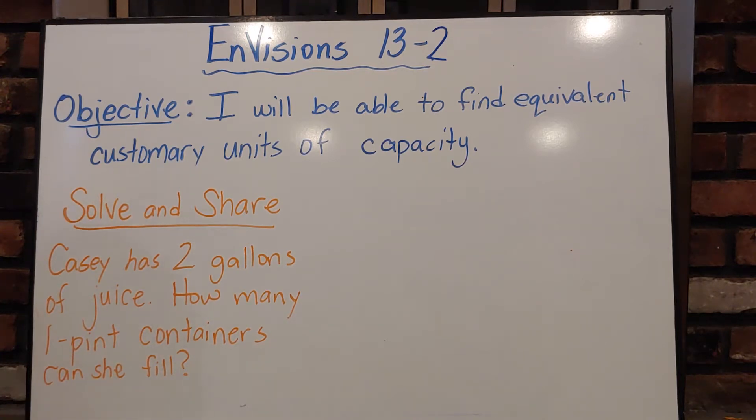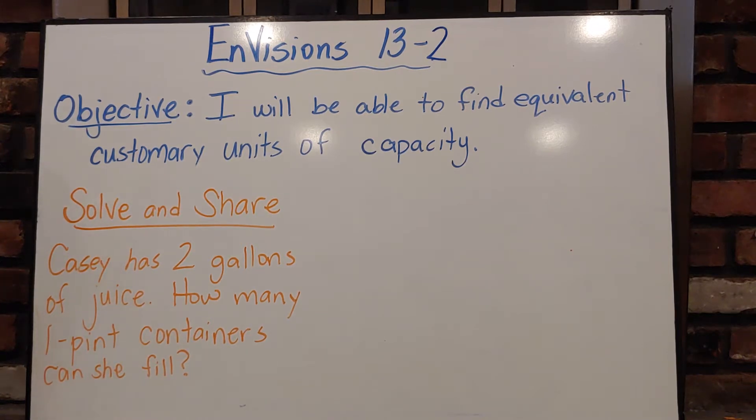So let's read our solve and share. Casey has two gallons of juice. How many one-pint containers can she fill?